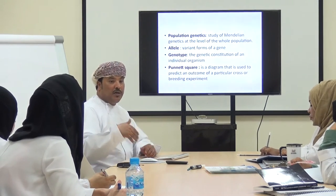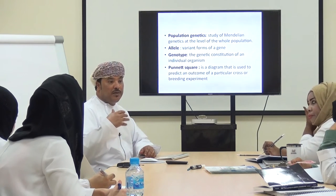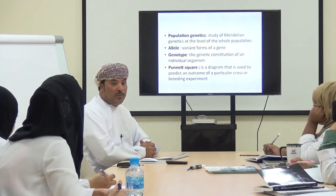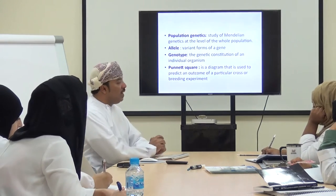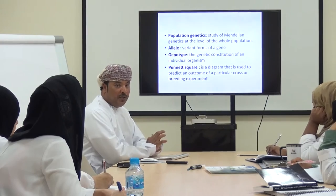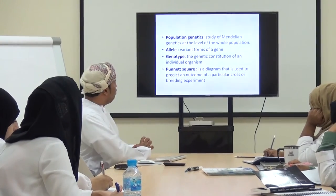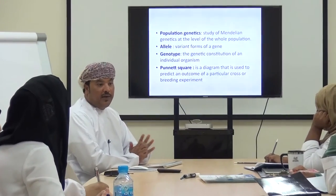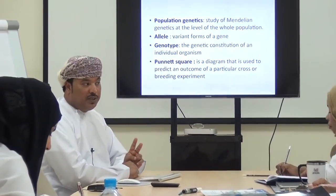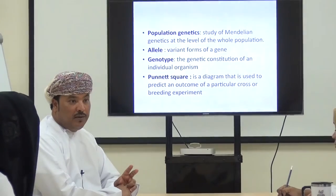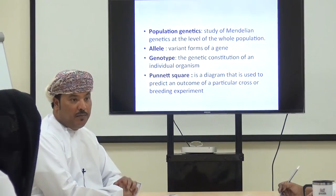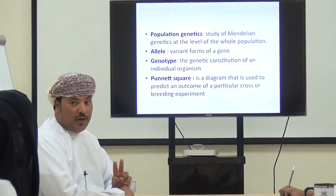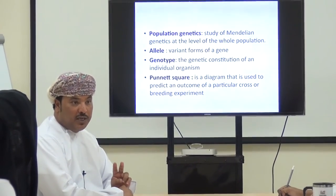There are certain formulas and calculations — you are going to know about one today, and my colleague will present another. Before that, there are certain terms to know. What do we mean by an allele? An allele is a variant form of a gene. In every locus there are two forms of the gene: one coming from the father, one coming from the mother — allele A capital, or allele A small. These are two forms of the allele.